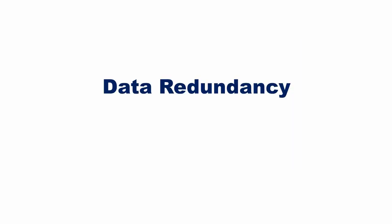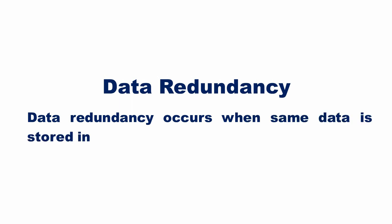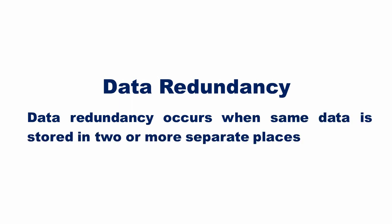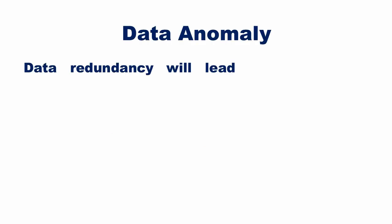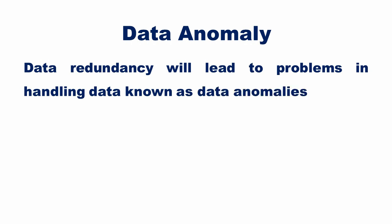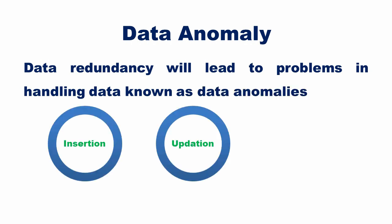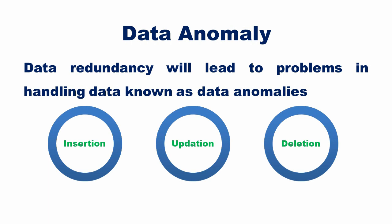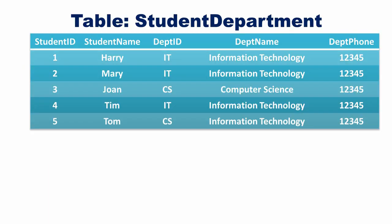In simple words, redundancy means repetition. Data redundancy occurs when the same data is stored in two or more separate places. Because of redundancy, a number of problems arise — data redundancy leads to problems in handling data known as data anomalies. There are three types of anomalies: insertion, updation, and deletion.